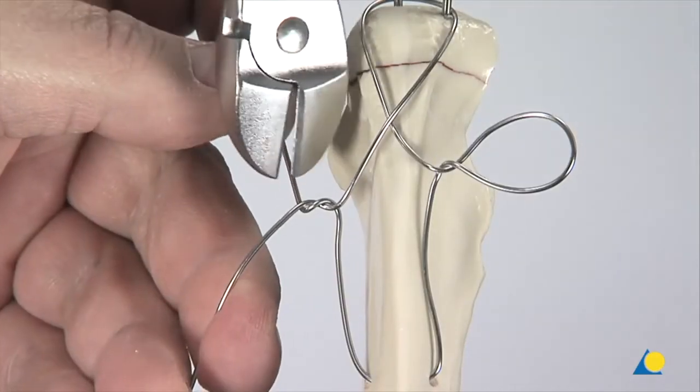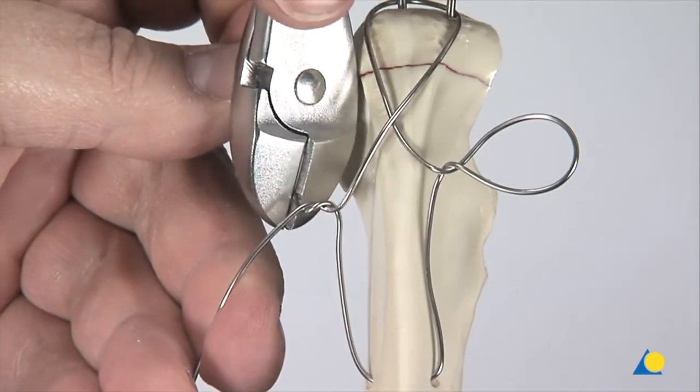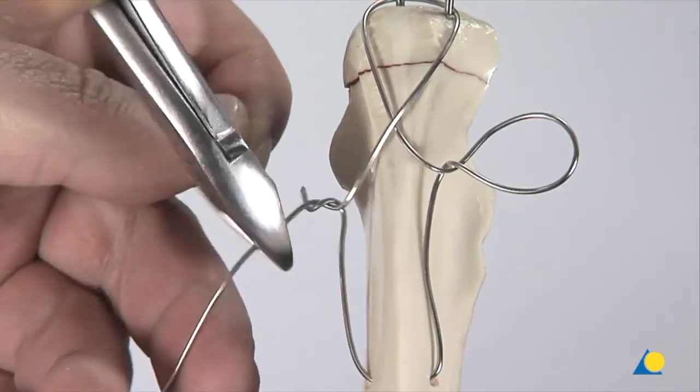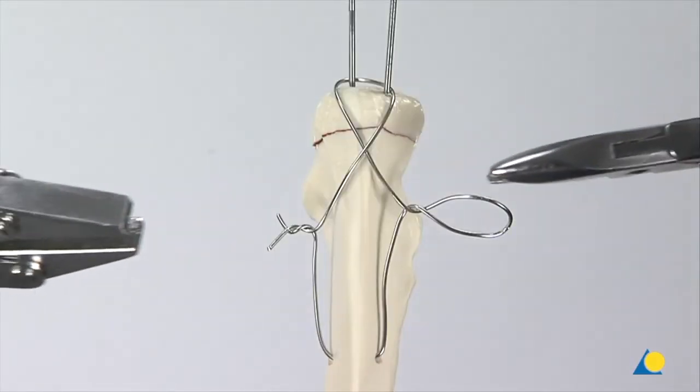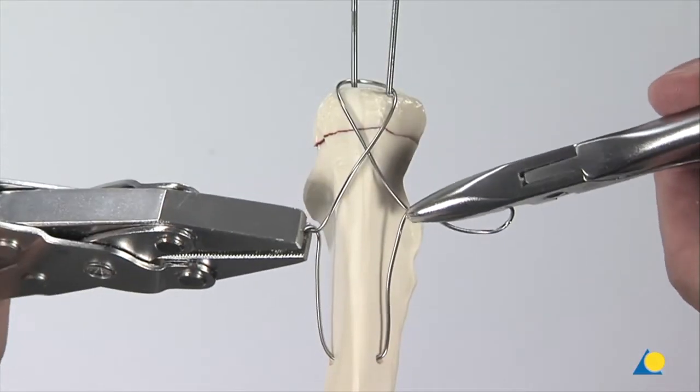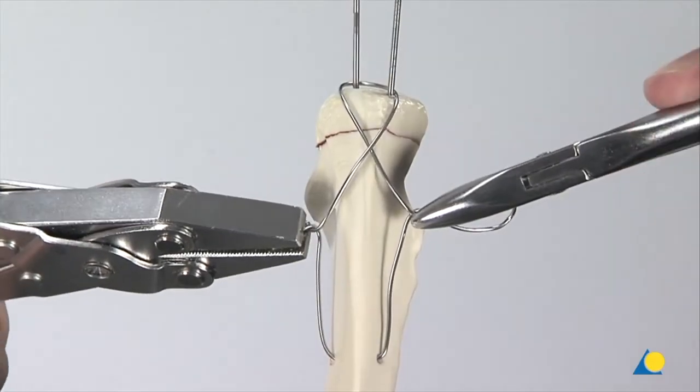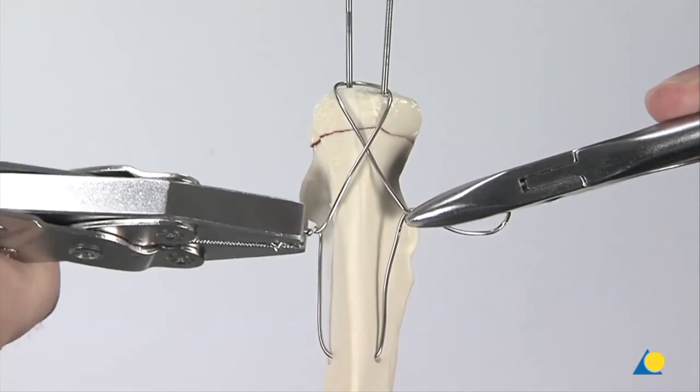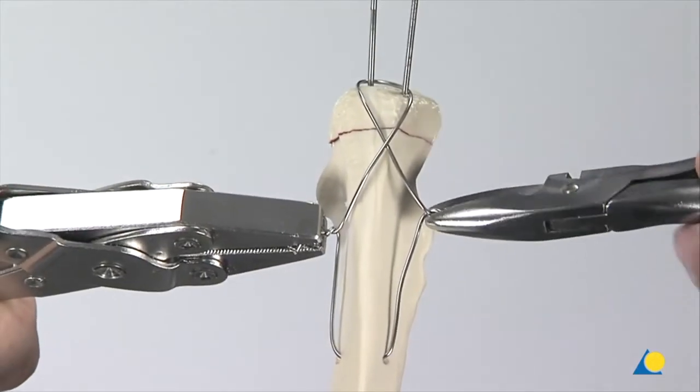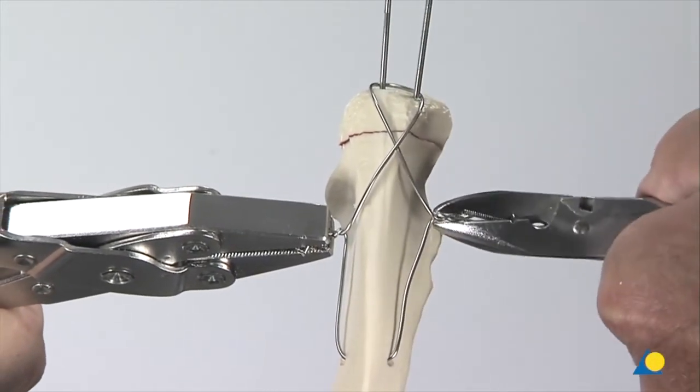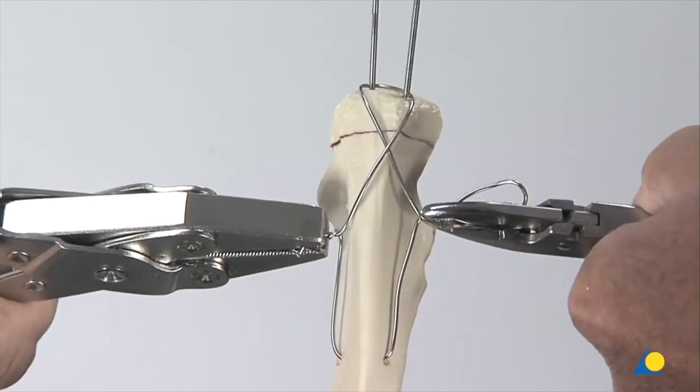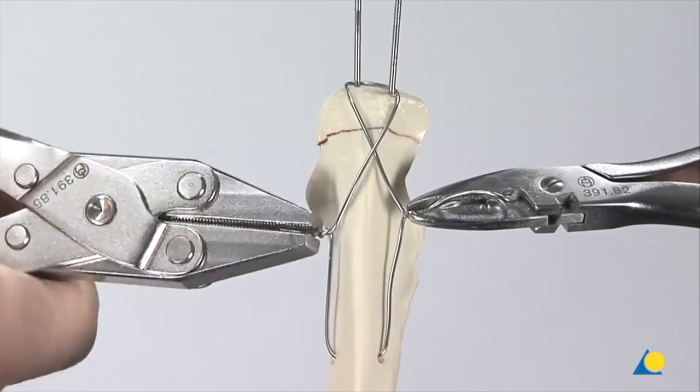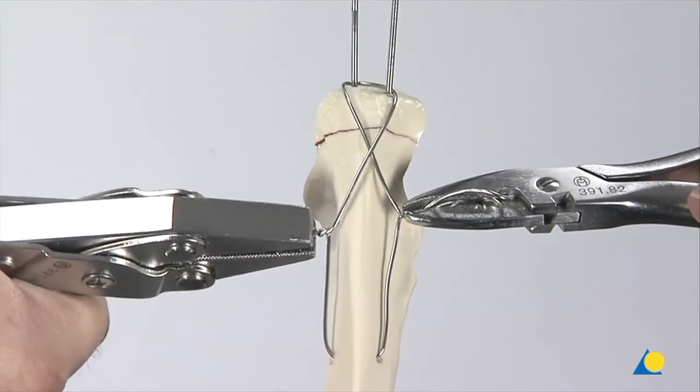The ends of the wires are trimmed with the wire cutters. To tighten the wire, the flat-nosed parallel pliers and the wire bending pliers are used. The wires are pulled and twisted at the same time. To ensure that tension is applied equally, this procedure is repeated alternately on either side of the bone. The wires should be twisted a minimum of 4 times.